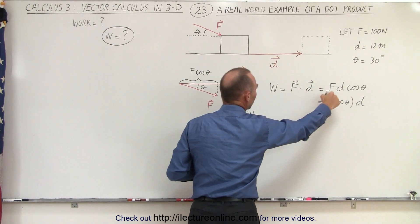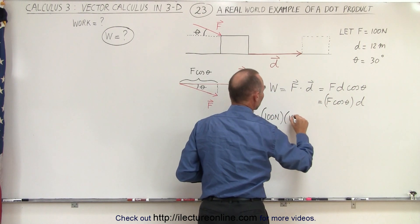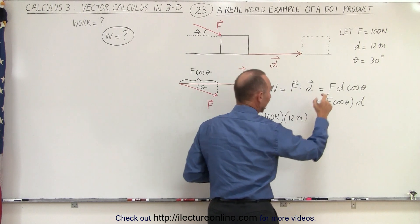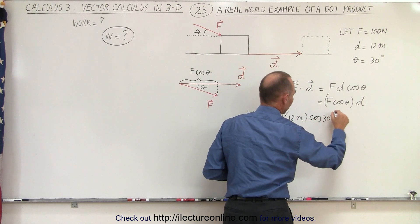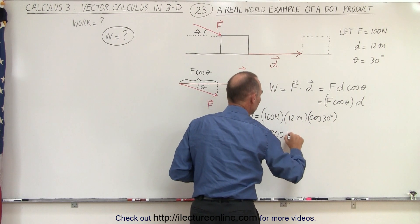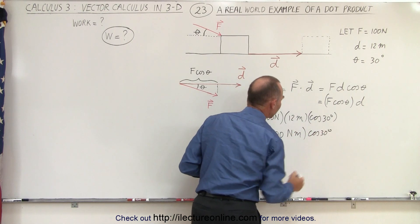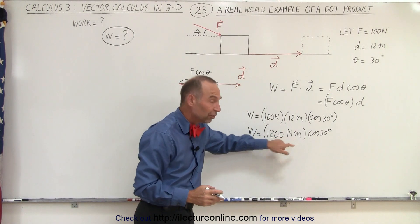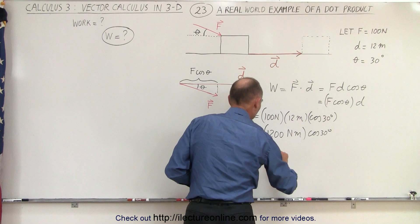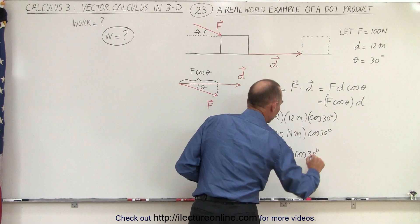The work is equal to the magnitude of the force, which is 100 newtons, times the magnitude of the displacement, which is 12 meters — so 12 times 100 is 1200 newton meters — and then we multiply that times the cosine of 30 degrees. Since newton times meters equals joules, the work is equal to 1200 joules times the cosine of 30 degrees.